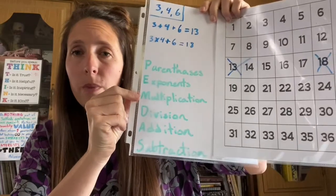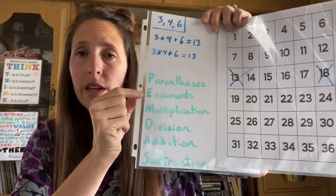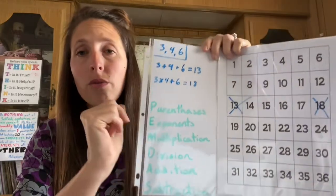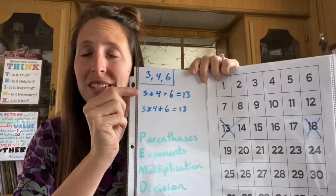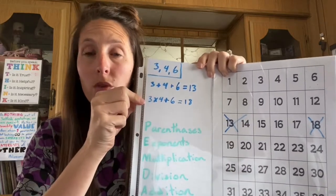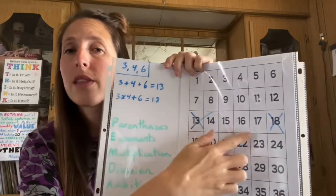Which is PEMDAS: parentheses, exponents, multiplication, division, addition, and subtraction. So for example, 3 plus 4 plus 6 equals 13, you mark it off on their board. 3 times 4 plus 6 equals 18, then you mark it off on their board.